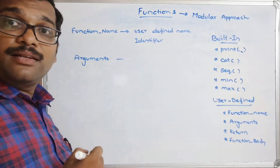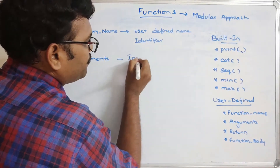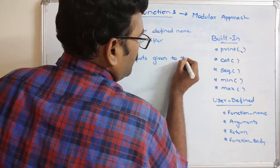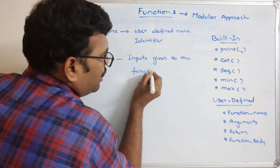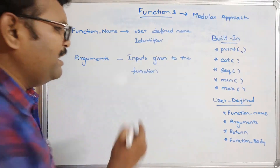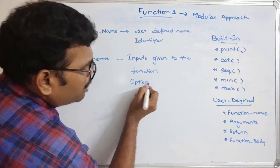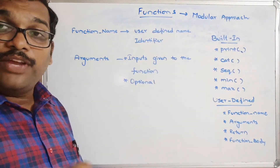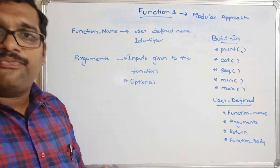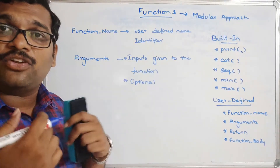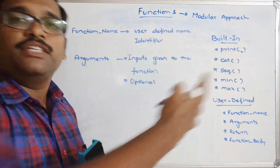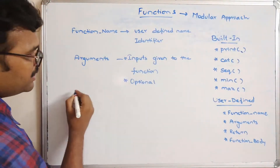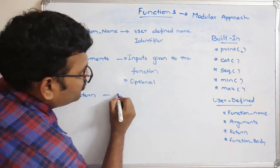The second component is arguments. Arguments are the inputs given to the function. These are optional — it is not mandatory to give arguments to the function. We can pass inputs from the function call to the function definition, or we can also take the inputs inside the function itself.